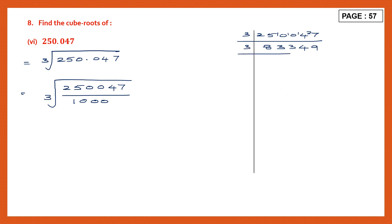So let's do it. Let's take 8 — 3 twos are 6, there is 2 left, so 23, 3 sevens are 21, again 2 left, 23, 3 sevens are 21, 2 left, 24, 3 eights are 24, 3 threes are 9. Now is this number divisible by 3? Let's check — 2 plus 7 is 9, 9 plus 7 is 16, 16 plus 8 is 24, 24 plus 3 is 27. And 27 is in the tables of 3.